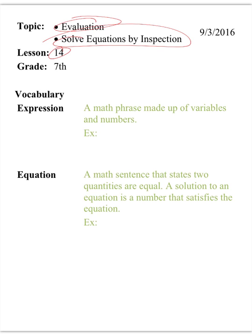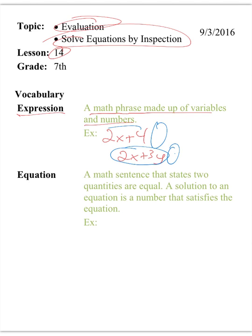So we only have two vocabulary words. One is an expression, which is a math phrase just like a sentence made up of variables and numbers. So you may have something like this 2x plus 4 and you may have something like 2x plus 3y. But notice that there is no equal sign. So this is what we call an expression.